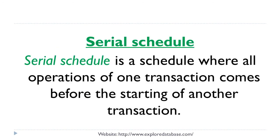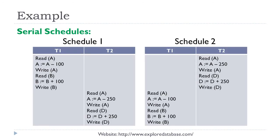A serial schedule is a schedule where all the operations of one particular transaction are completed before starting another transaction. Here we have shown examples of serial schedules. In Schedule 1, transaction T1 instructions are executed and then T2 starts. In Schedule 2, all the instructions from T2 are completed before T1 starts. These two schedules are said to be serial schedules.